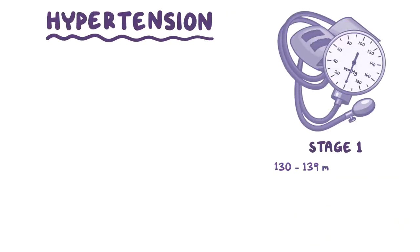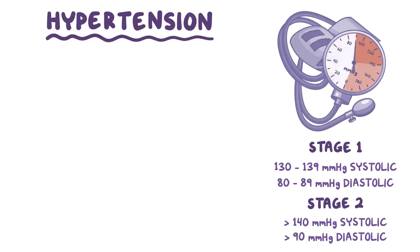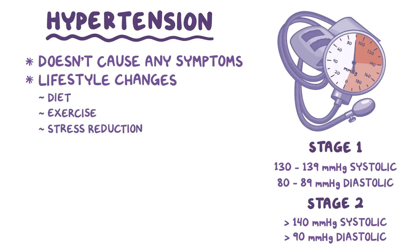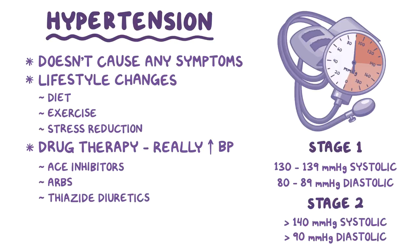As a quick recap: stage 1 hypertension is defined as 130–139 mmHg systolic and 80–89 mmHg diastolic, while stage 2 hypertension is defined as greater than 140 mmHg systolic and greater than 90 mmHg diastolic. Hypertension usually doesn't cause any symptoms, and the first line of treatment is lifestyle changes like changes to diet, exercise and stress reduction. Drug therapy may be given to patients with really high blood pressure or risk of adverse events. The four main medication classes used are ACE inhibitors, angiotensin receptor blockers or ARBs, thiazide diuretics, and long-acting calcium channel blockers like dihydropyridine.